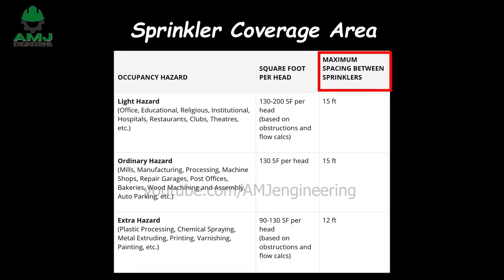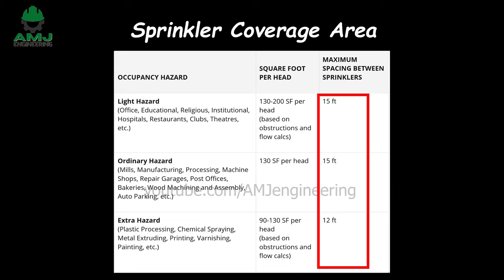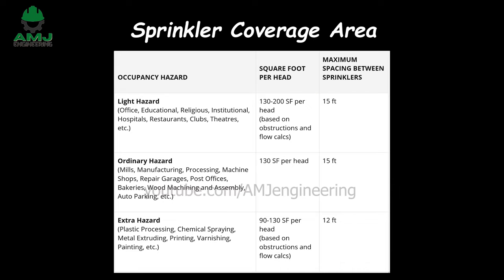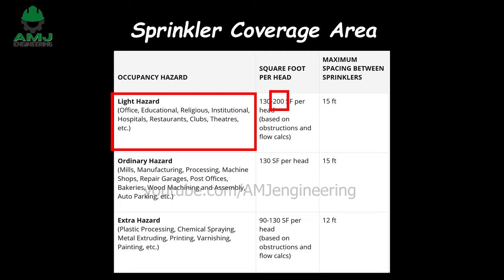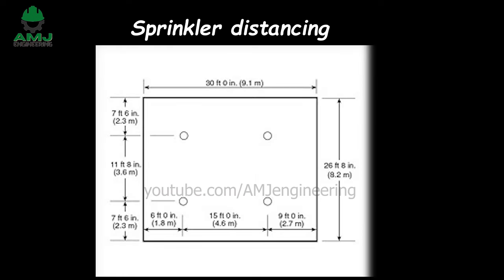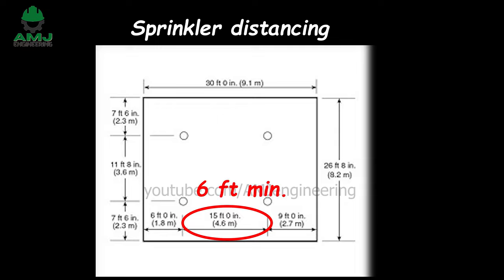Sprinkler head spacing. The table below shows sprinkler spacing requirements based on NFPA 13. For example, in a light hazard office area, the maximum coverage area per sprinkler head is 200 square feet and the maximum design spacing between sprinklers is 15 feet. The maximum distance of a sprinkler head from the wall is half of the maximum distance between sprinkler heads. The minimum distance between sprinklers is typically 6 feet.